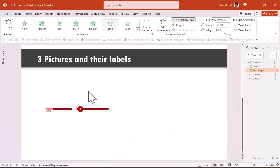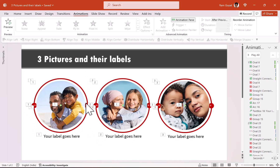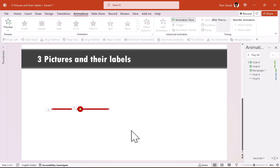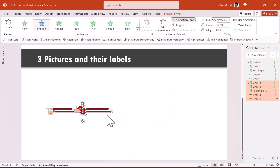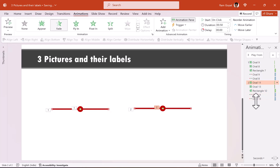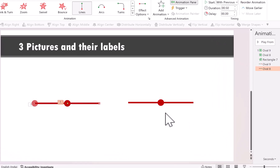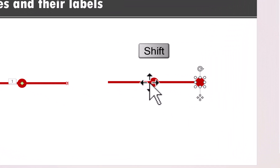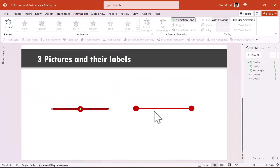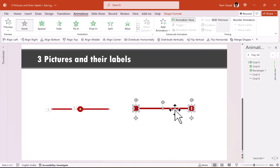The next thing we want is the elements we just created to spin so we have a circle formed. We are going to use a very interesting trick called the magic switch. I'm going to select this, press Control+D to create a duplicate, and remove all the animations associated with these elements. Now I'm going to manually move this to the end point, and this one to the end point. This is the end result of the first animation. I'm going to select everything, press Control+G to group it, and then switch these elements with a simple disappear and appear animation.